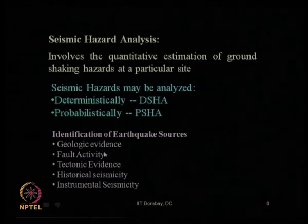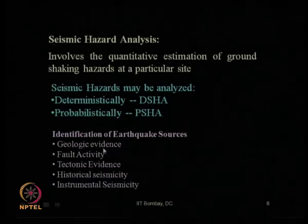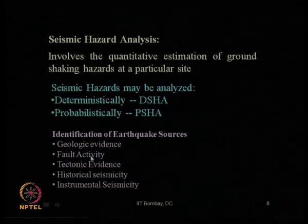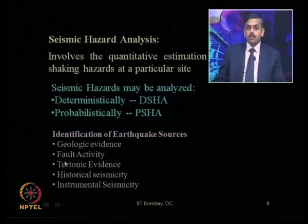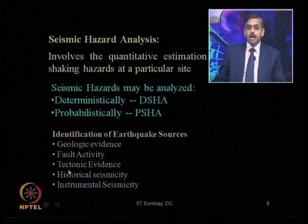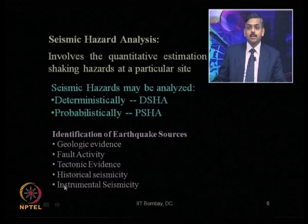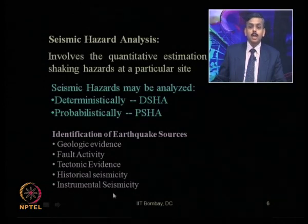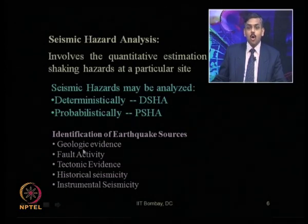The first step to do seismic hazard analysis is to identify the earthquake sources. To identify earthquake sources, we look at characteristics like geologic evidence from historical earthquakes, fault activity for past earthquakes, tectonic evidence and movements, historical seismicity at that particular site or close vicinity, and instrumental seismicity — that is, recorded values of seismicity at a particular site over the years through recording stations.